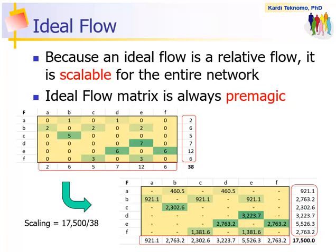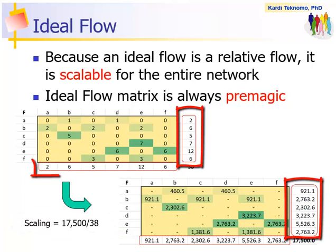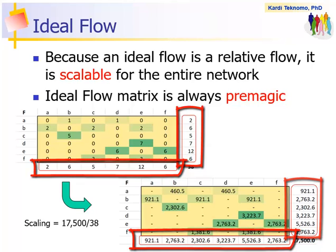Because ideal flow is a relative flow, it is scalable for the entire network. Our total flow is 38, but our total demand is 17,500. Thus, we can scale up by multiplying with the total demand by factor 17,500 divided by 38. Ideal flow matrix is always pre-magic. You see, the sum of rows is always equal to the sum of columns.